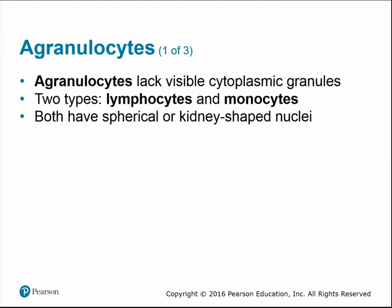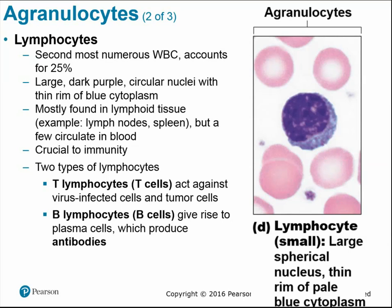Agranulocytes have no visible granules — there are only two types: lymphocytes and monocytes (the '-cytes'). Both have a spherical or kidney-shaped nucleus rather than lobed nuclei like granulocytes. Lymphocytes are the second most abundant white blood cells; they have a large dark purple circular nucleus with a thin rim of light blue cytoplasm and are mostly found in lymphoid tissue like lymph nodes and spleen, though some circulate in the blood.